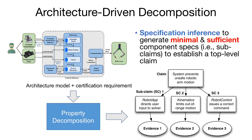The first part of our proposal is to develop a technique called property decomposition, which takes an architectural description of the system as well as a certification requirement that we want to achieve, and then automatically derives a set of subclaims corresponding to specifications on the individual components that are together sufficient to establish the top-level claim.